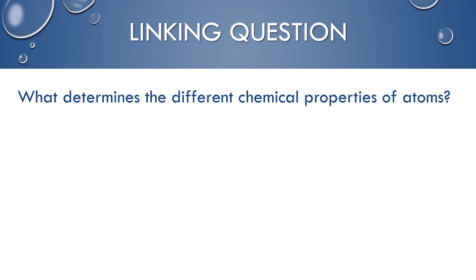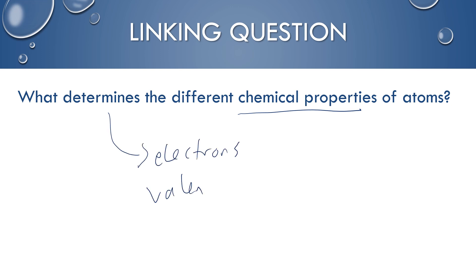We have a couple of linking questions. What determines the different chemical properties of atoms? This links into Structure 1.3. Since we're focused on chemical properties, what determines them is mostly going to be the electrons — and more specifically, the valence electrons, those electrons in the outermost shell, because those are the ones that interact the most with other atoms and react. The whole atomic structure has some effects depending on the atom, including periodic trends like atomic radius, electronegativity, and ionization energy. The protons and neutrons do affect it, but it's always how it interacts with the electrons as well.